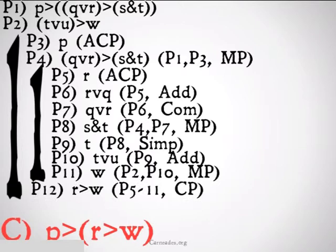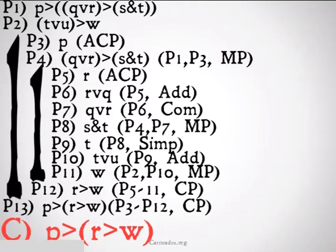In this one, we walked in with a P and we walked out with an R implies W, so we can conclude P implies R implies W, premise three through 12 conditional proof.